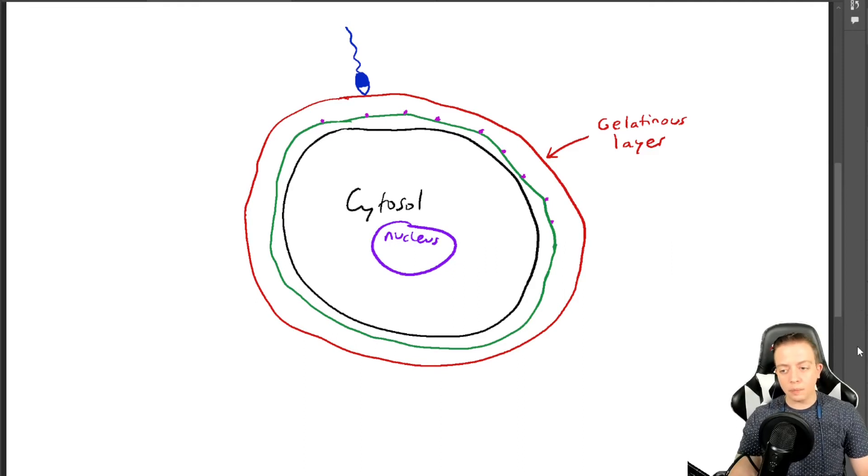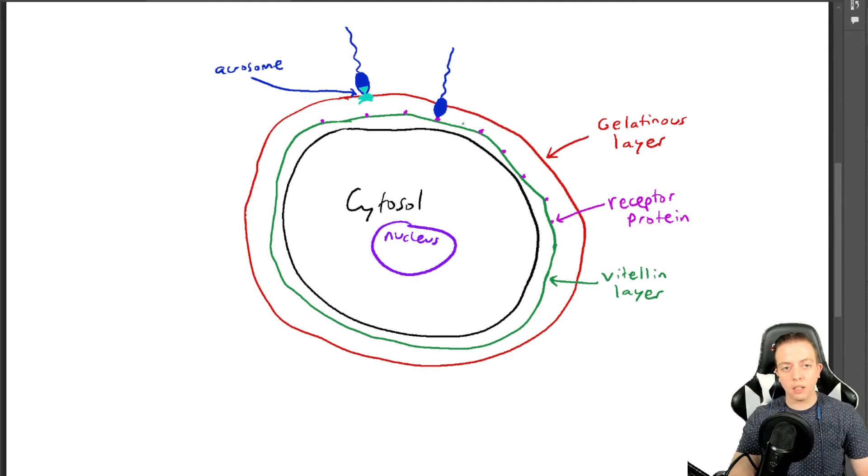And then once it makes contact, it has these enzymes in the acrosome, or this end part of the sperm. It's going to release the acrosomal enzymes to dissolve the gelatinous layer. And then once it does this, it's going to move forward and bind with a receptor protein. So there's a protein on the acrosome of the sperm that's going to bind with the receptor protein on the vitellin layer of the ovum. And then once that happens, they're going to fuse.